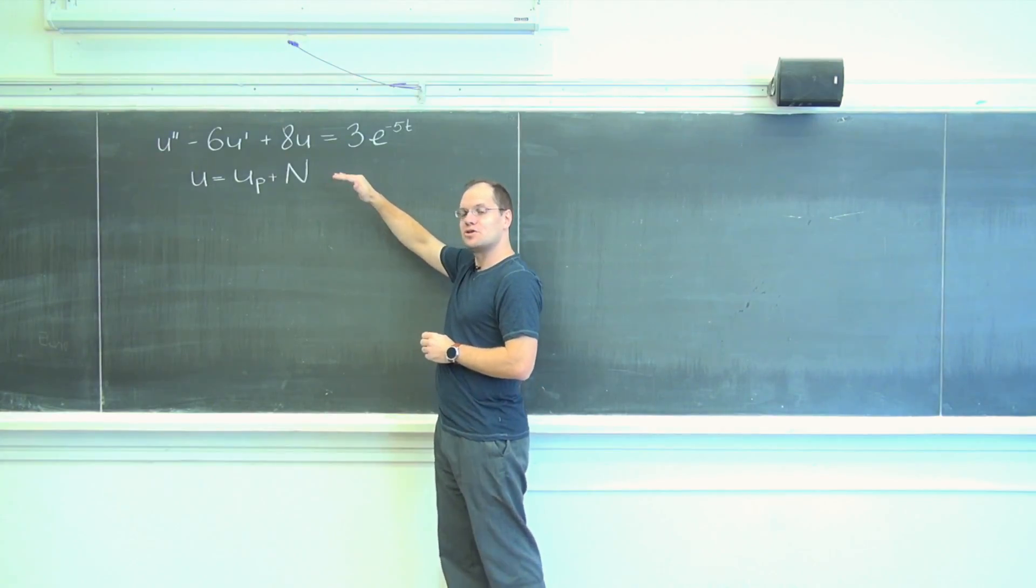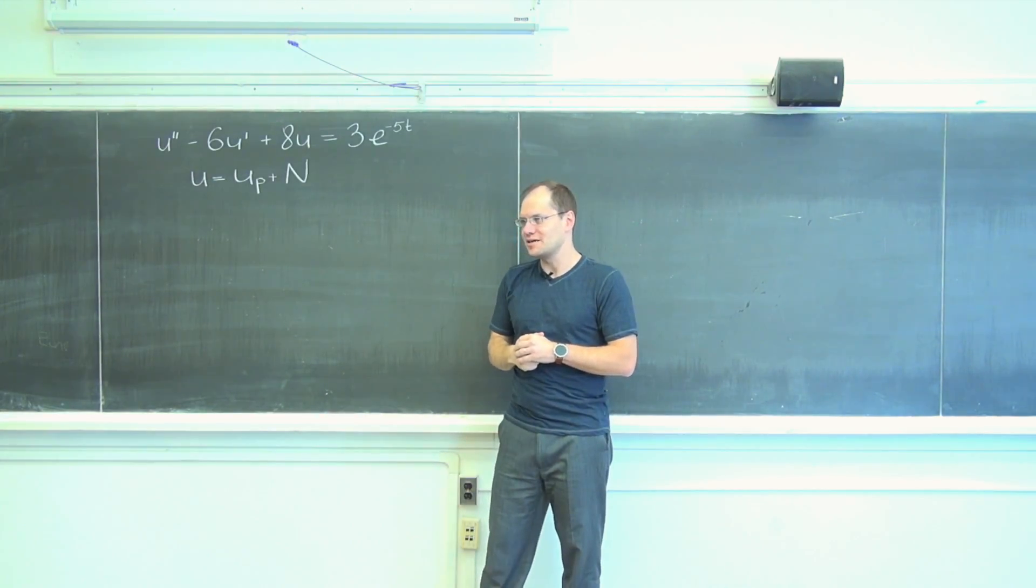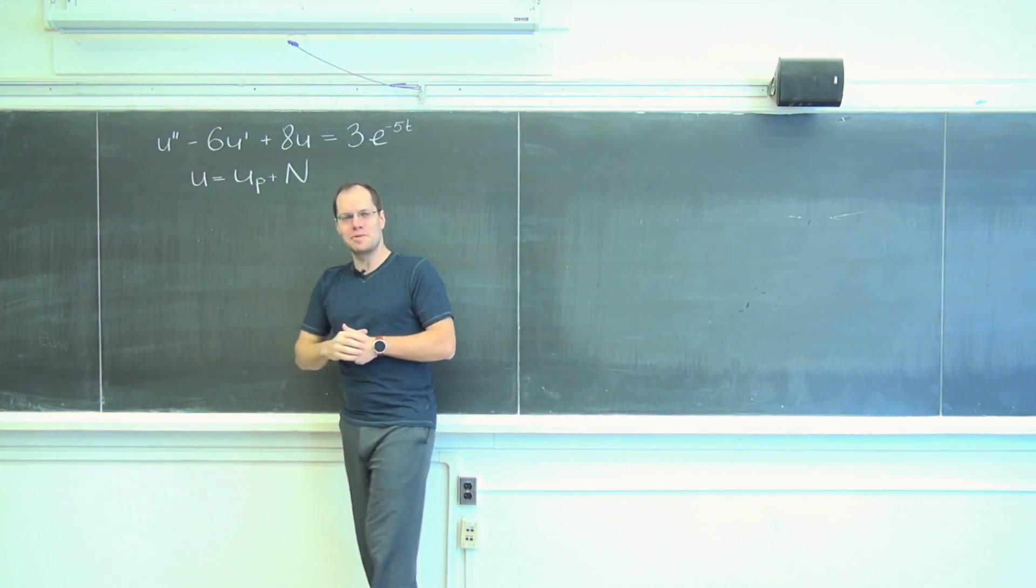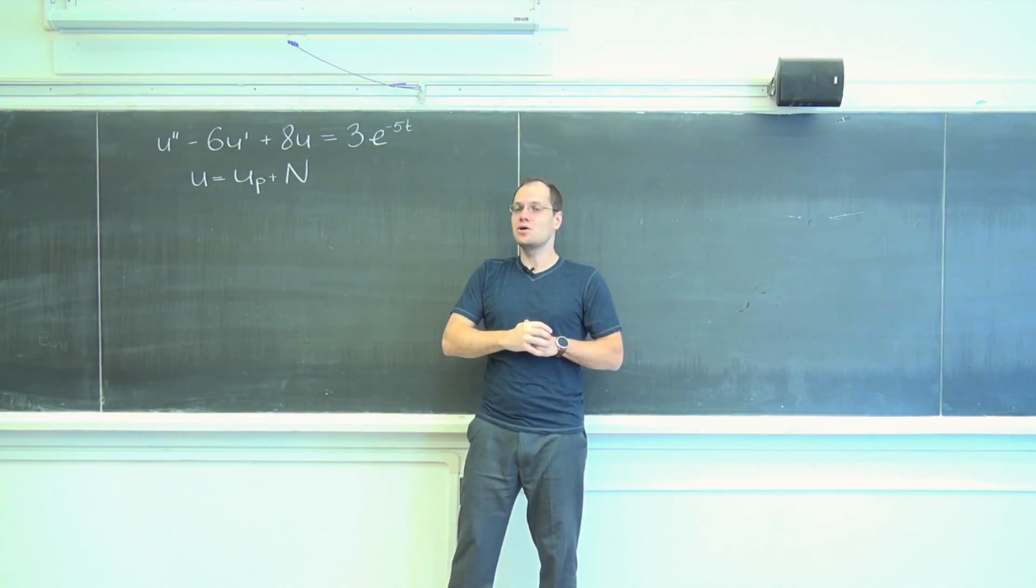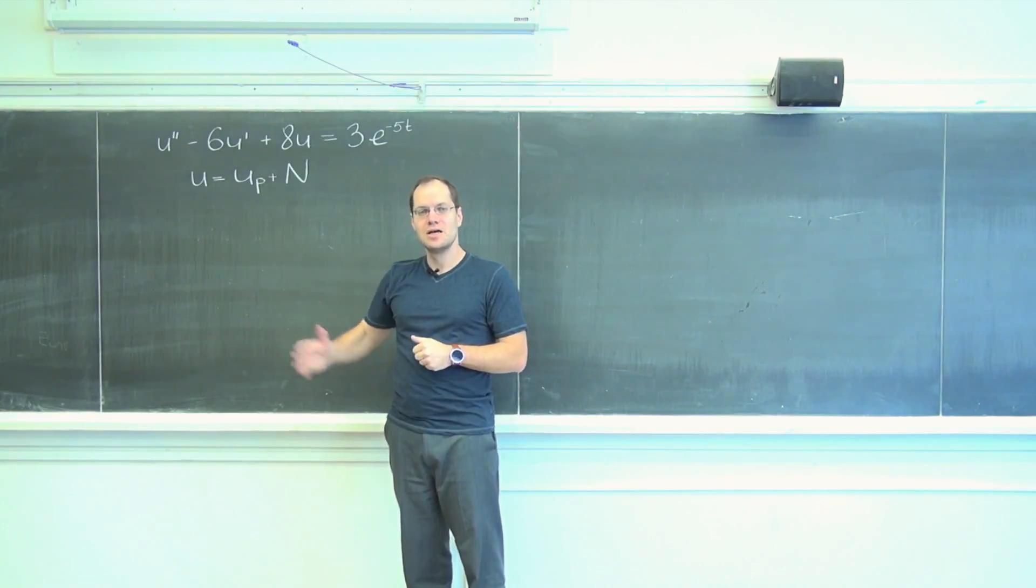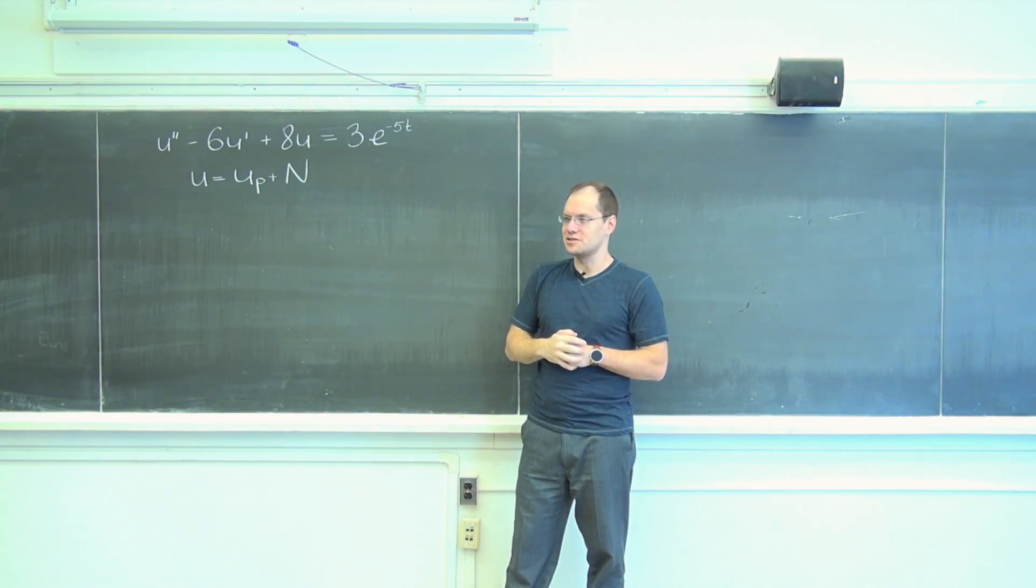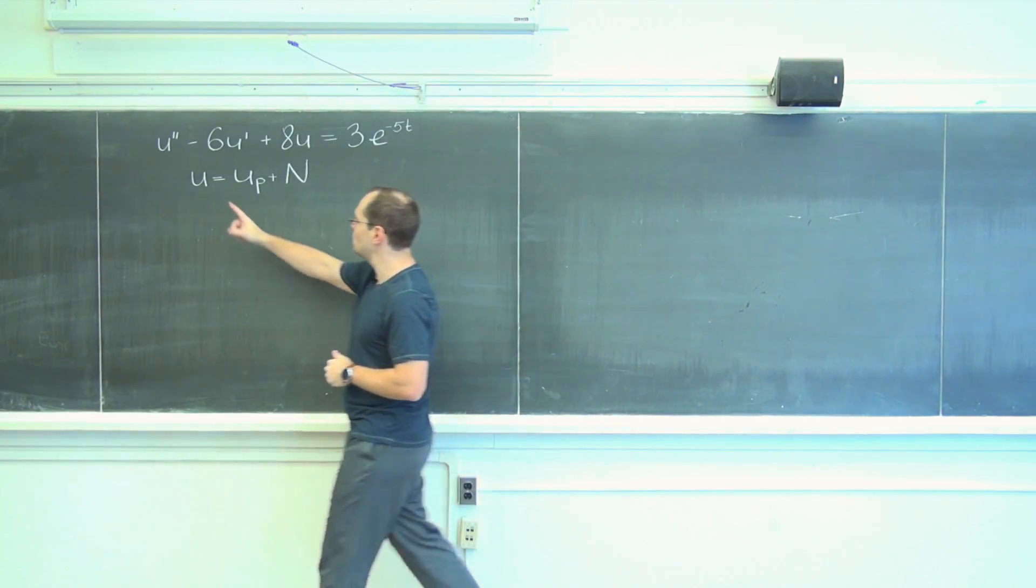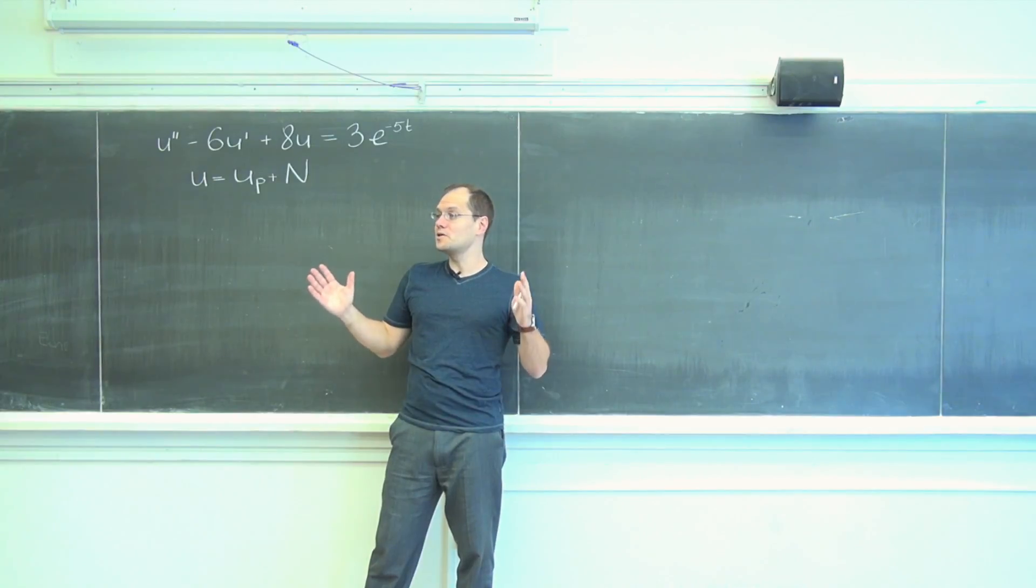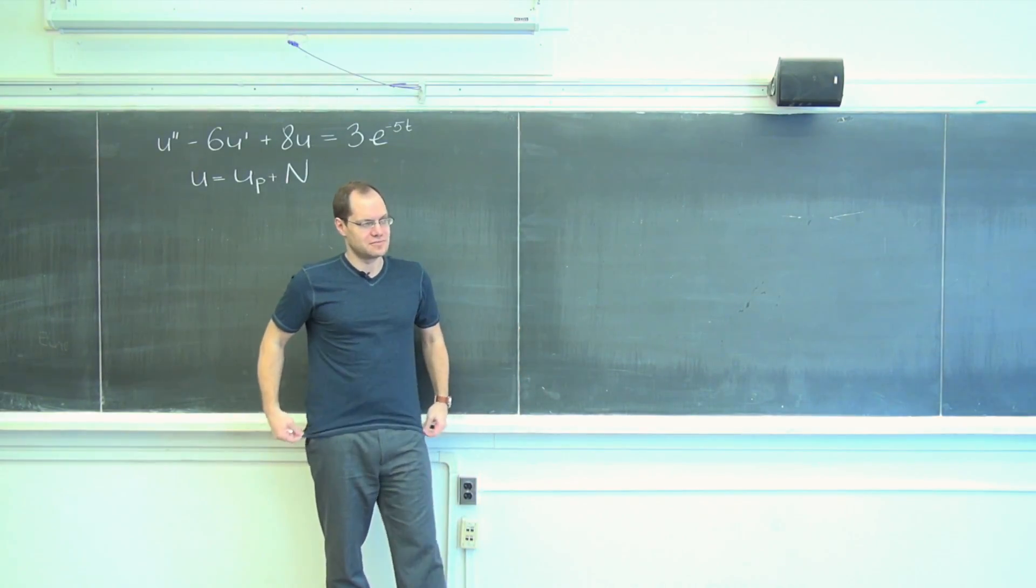You should know its general shape and its general shape is a particular solution, any function that satisfies this equation, plus the null space. Right now we don't have initial conditions. This equation, because it's second-order, will require two initial conditions. So far we don't have initial conditions because we're looking for the general solution.